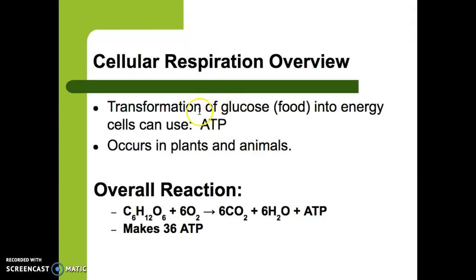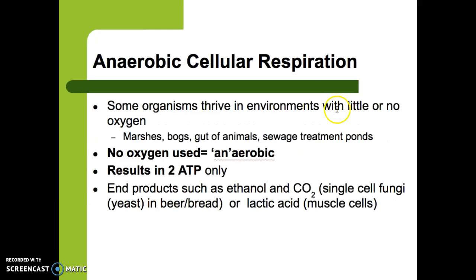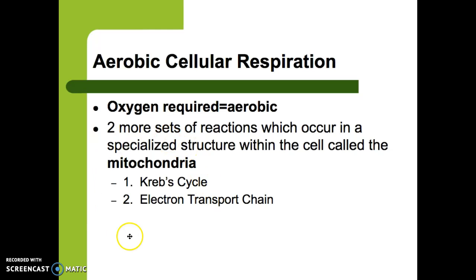Now looking back at aerobic cellular respiration — this requires oxygen and happens in the mitochondria. There are two steps: the first is glycolysis, which happens out in the cytoplasm and is anaerobic. Then inside the mitochondria we have two more reactions: the Krebs cycle and the electron transport chain. You don't need to be super familiar with these processes, just familiar with their names.